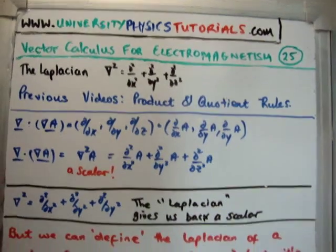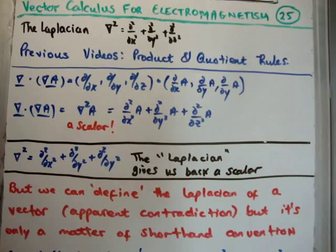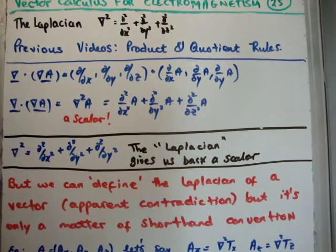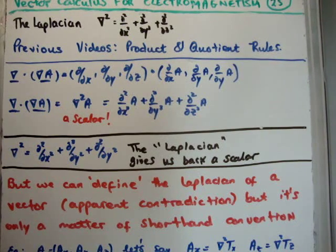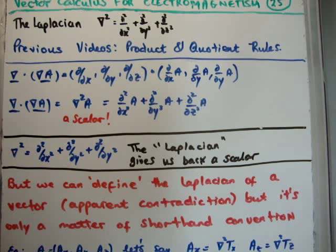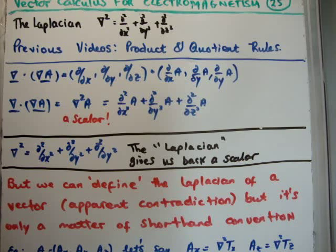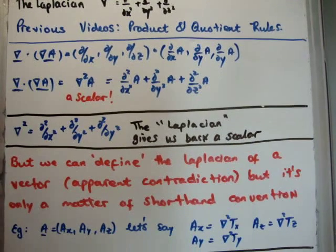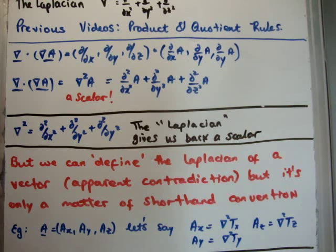But what's interesting really and probably more important is that it seems that we can define the Laplacian of a vector, which is an apparent contradiction. But it's only a matter of shorthand convention. So let's say for example we have a vector. We have the following vector which is A sub x in the i hat, A sub y in the j and A sub z in the k hat direction.